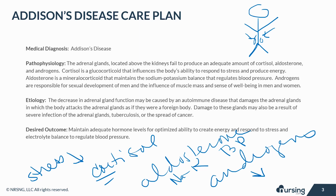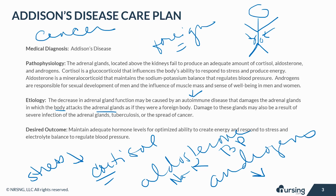The decrease in adrenal gland function may be caused by an autoimmune disease that damages the adrenal glands, in which the body attacks the adrenal glands as if they were a foreign body. Damage to these glands may also be a result of severe infection, tuberculosis, or the spread of cancer. The desired outcome is to maintain adequate hormone levels for optimized ability to create energy, respond to stress, and maintain electrolyte balance to regulate blood pressure.